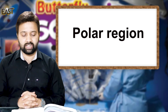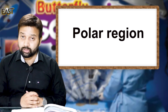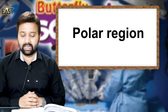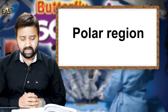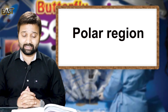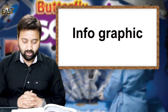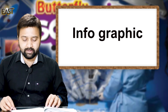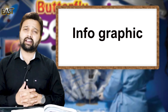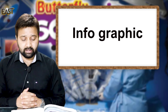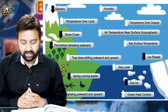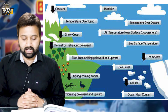Our next terminology is polar region. The polar region is the area around the North Pole or the South Pole. The northern polar region consists mainly of floating pack ice, seven to ten feet — two to three meters — thick, floating on the Arctic Ocean and surrounded by land masses. Next, infographics: a visual representation of information or data as a chart or diagram is called infographics.